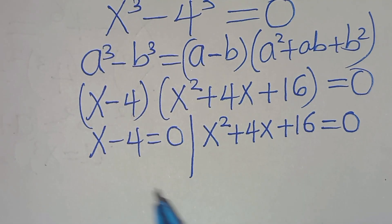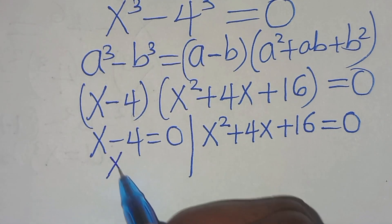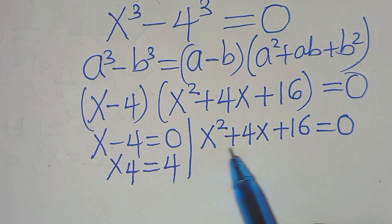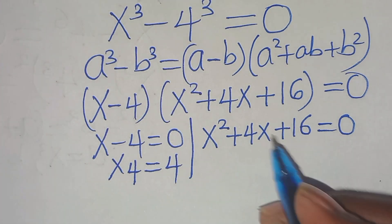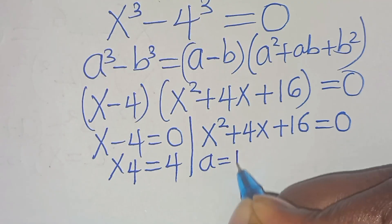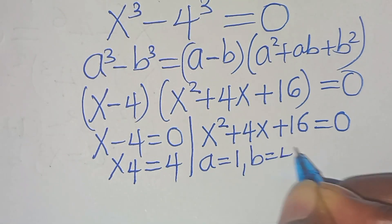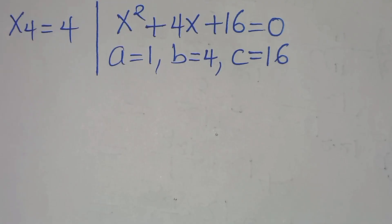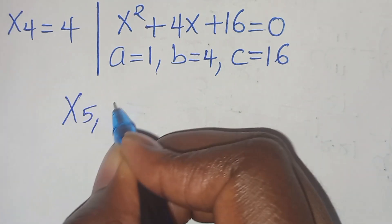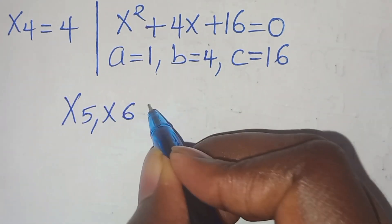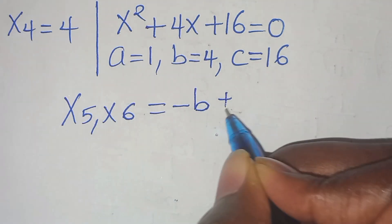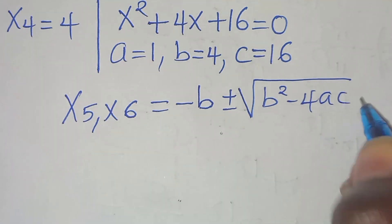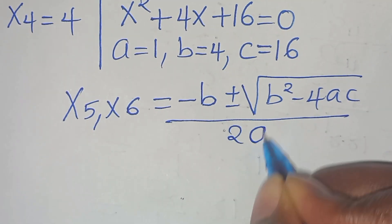From the first part, x minus 4 equals 0, so x₄ is equal to 4. The second part, x squared plus 4x plus 16 equals 0, is a quadratic equation with a equal to 1, b equal to 4, and c equal to 16. To solve for x₅ and x₆, we apply the quadratic formula: minus b plus or minus the square root of b squared minus 4ac, divided by 2a.